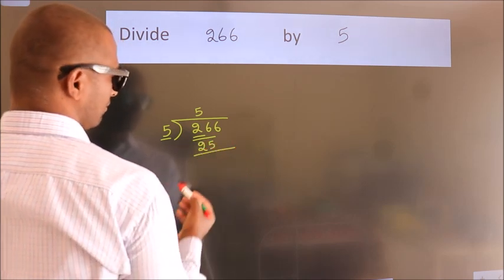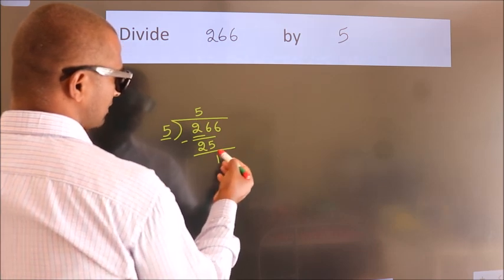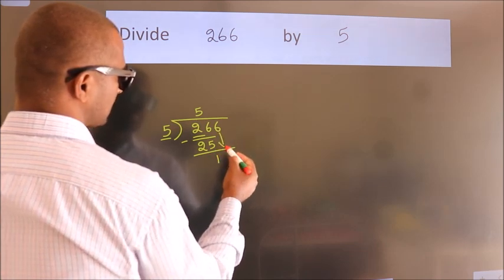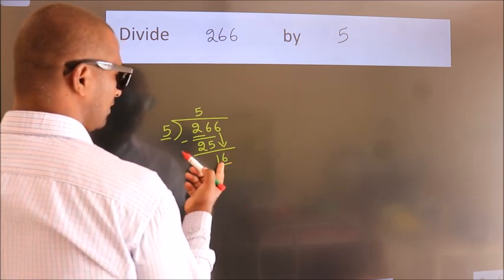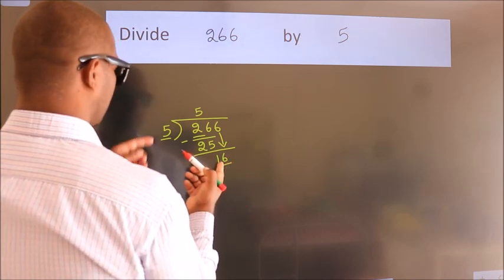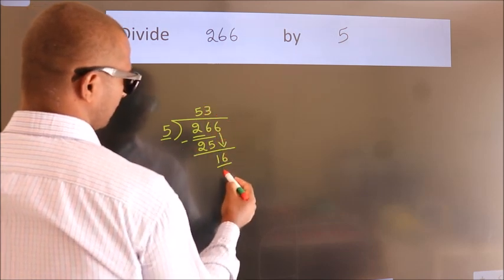Now we should subtract. We get 1. After this, bring down the beside number. So 6 comes down. So we have 16. A number close to 16 in the 5 times table is 5 threes, which equals 15.